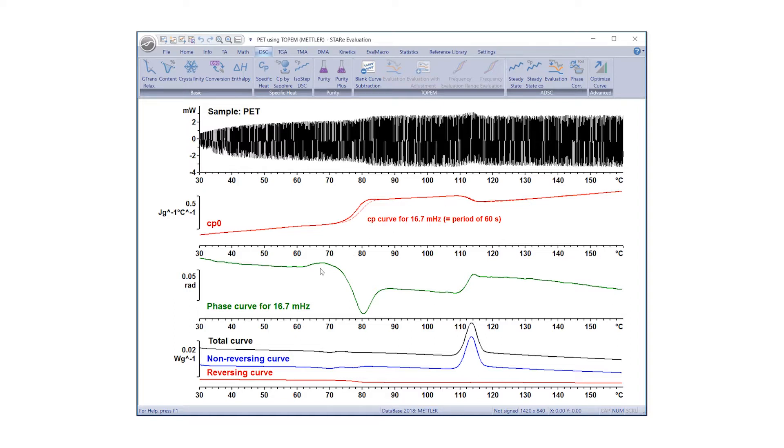The phase curve can be used to determine the two components of the Complex Specific Heat Capacity. The bottom curves display the total, non-reversing, and reversing heat flows.